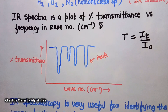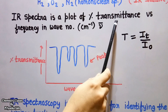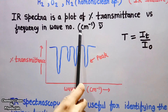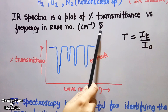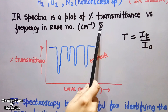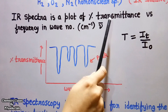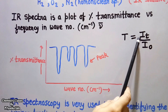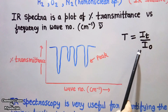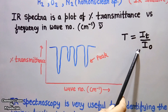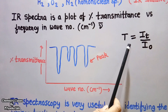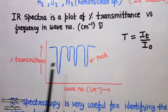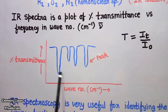IR spectra is a plot of percentage transmittance versus frequency in wave numbers (cm⁻¹, given by ν̄ = 1/λ). Transmittance is the ratio IT/I₀, where IT is the intensity of the transmitted light and I₀ is the intensity of the original incident light. In this spectra, we plot percentage transmittance against wave number and we get several dips. We do not get peaks — the peaks appear as dips. This is because the molecule is absorbing IR radiation while we are plotting transmittance, and absorbance A = log(1/T), so as absorbance increases, transmittance decreases.